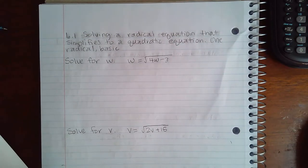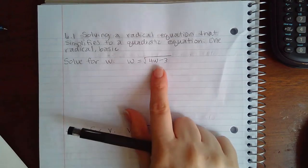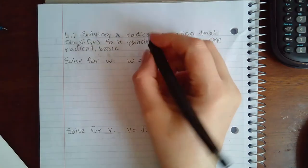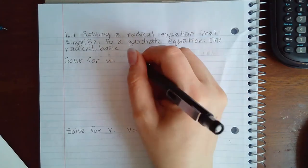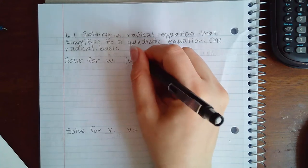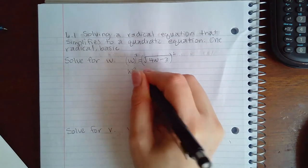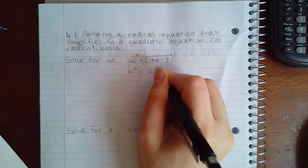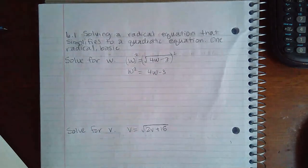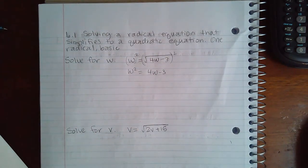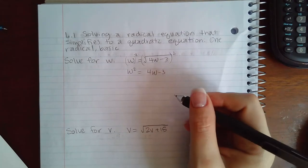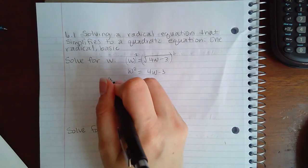So here we're going to solve this equation. My radical is already by itself so I'm going to go ahead and apply the power on both sides to eliminate that radical. I get w² equals 4w minus 3. Because I have a square on my variable now this is a quadratic equation which means I do want to get it equal to 0.